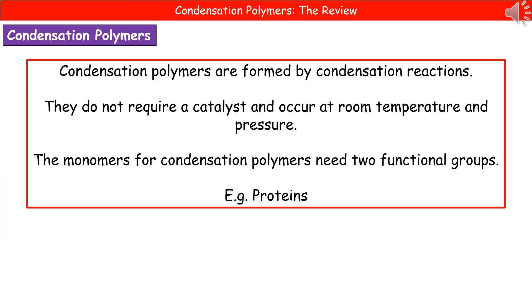When our condensation polymers are forming through these condensation reactions, they don't require a catalyst and they often occur at room temperature and pressure. That's a key difference between our condensation polymers and our addition polymers. What we do need, though, is that the monomers for condensation polymers have two functional groups.